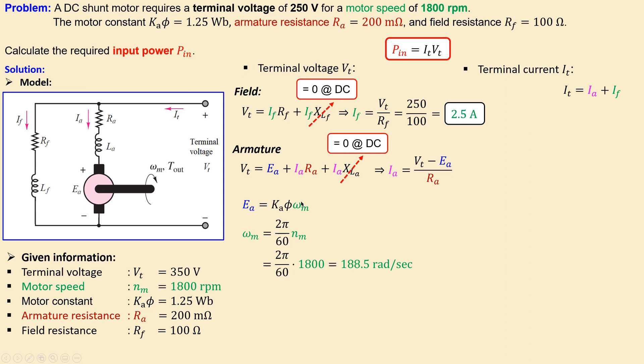Now using that here and we can now calculate using the motor constant of 1.25, then you will get to a value which is very close to 235.6 volts.